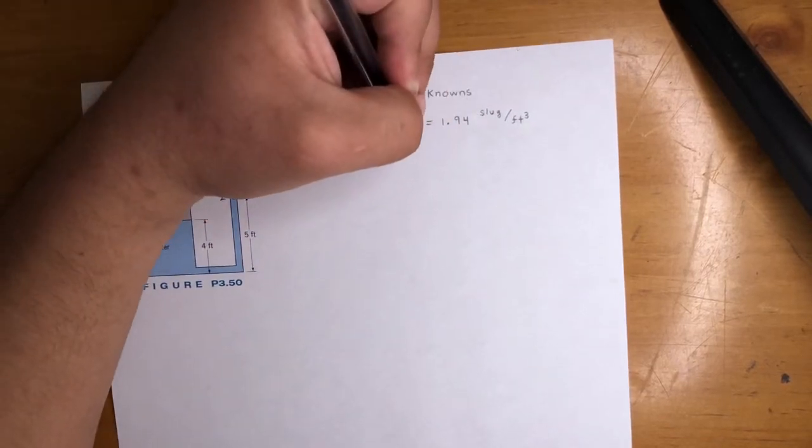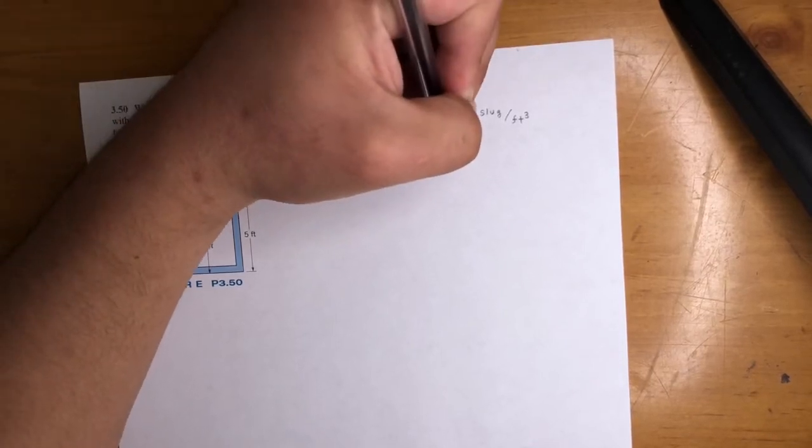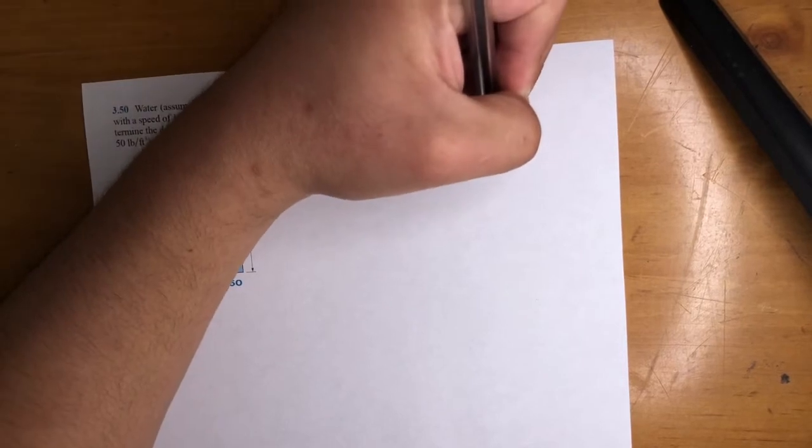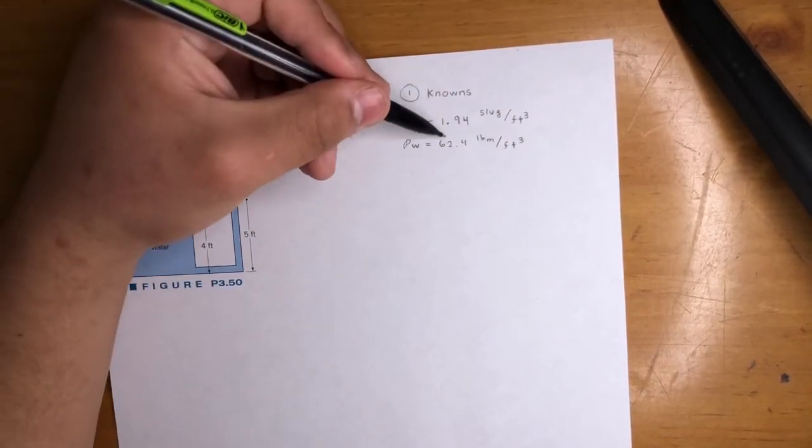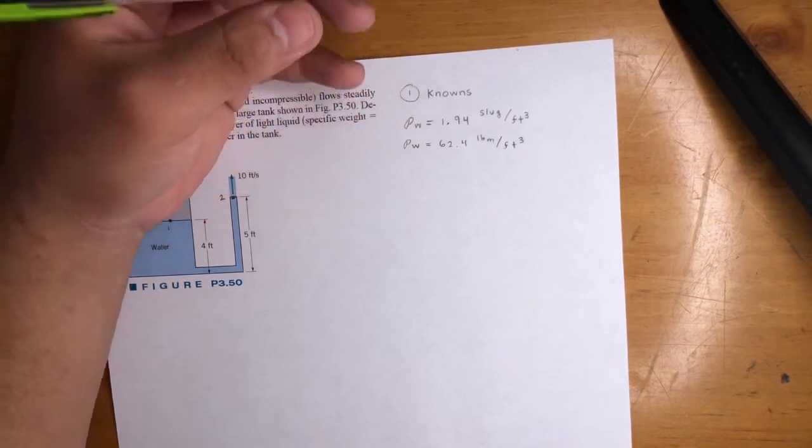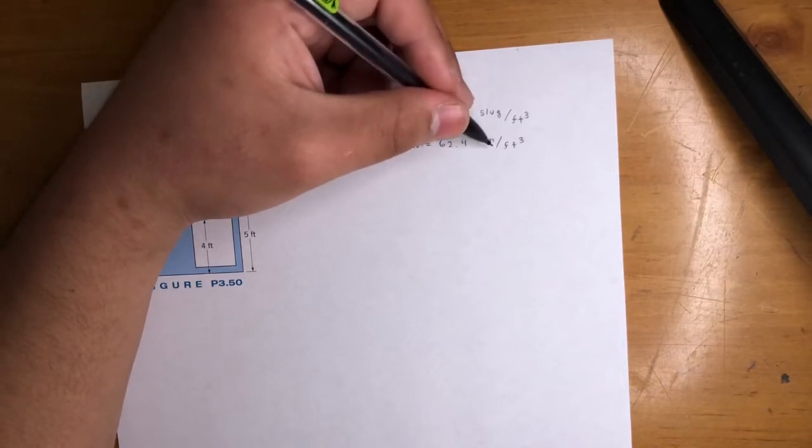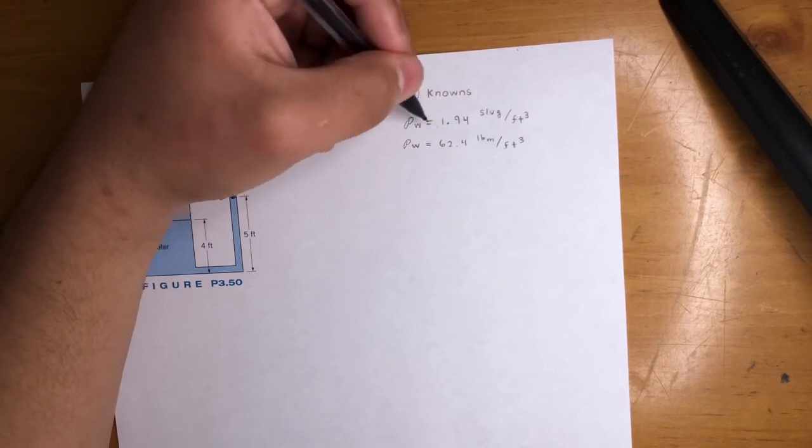The density of water is also, we won't need this number, but it's also 62.4 pound mass per feet cubed. So if you divide this by this, you'll get 32.2, which is gravity. So what that means is 1 pound mass is equal to 32.2 of these, if that makes sense.